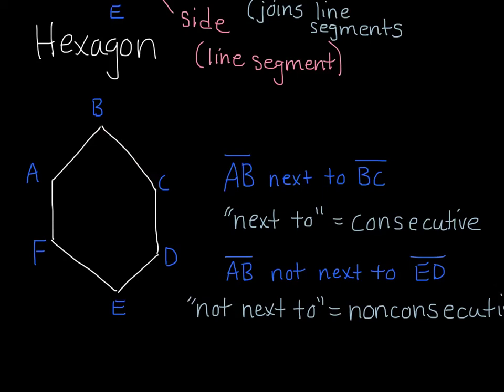Those are touching. I can also say that for the vertices, A is consecutive to F and is consecutive to B, but is non-consecutive with C, D, and E. They do not touch one another. They're not connected by a line.